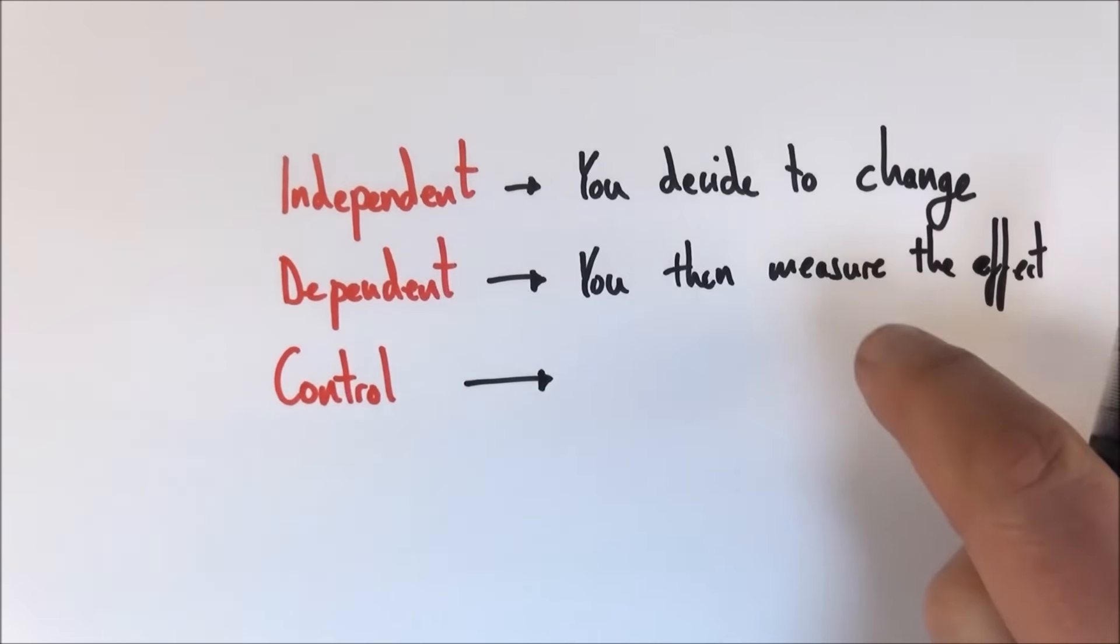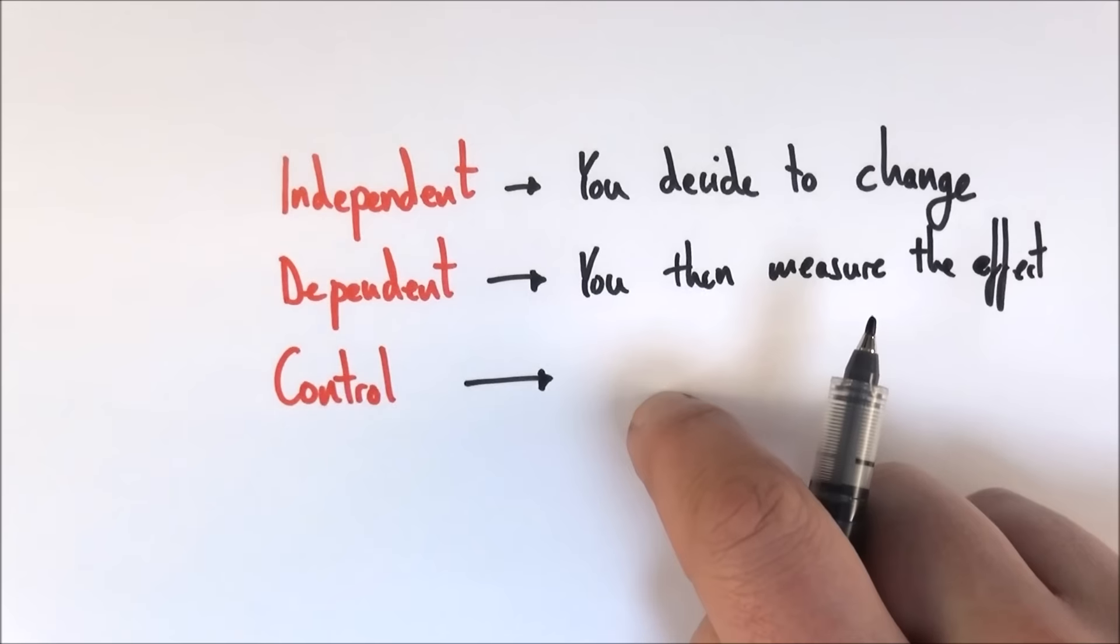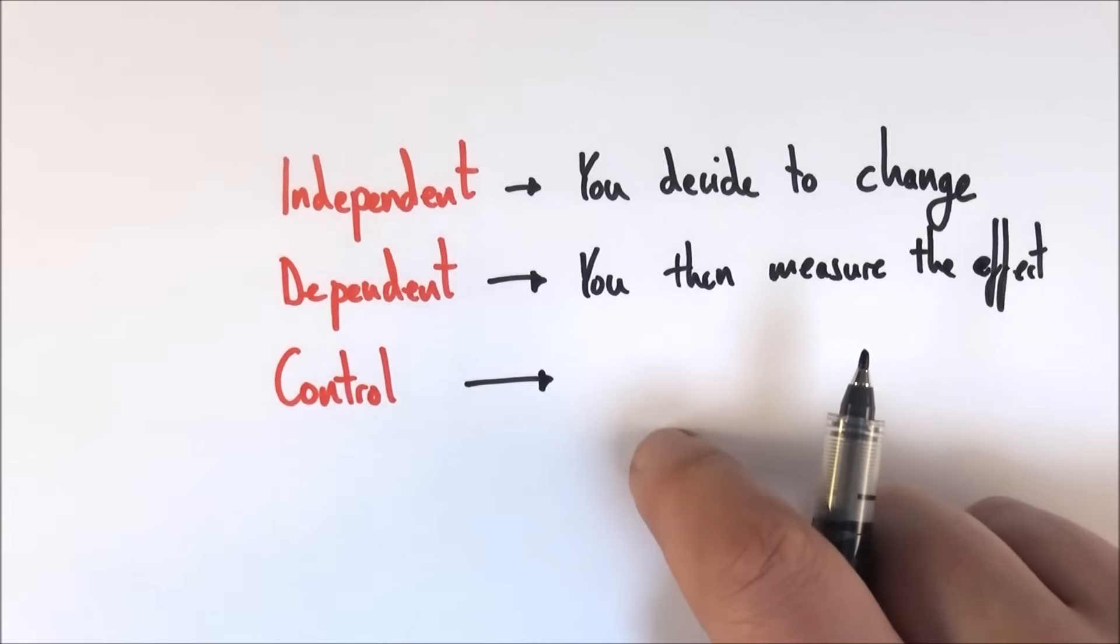But in order to really understand what's actually having this effect, you need to keep other things the same. These are the control variables and they allow you to make sure it's a fair test.